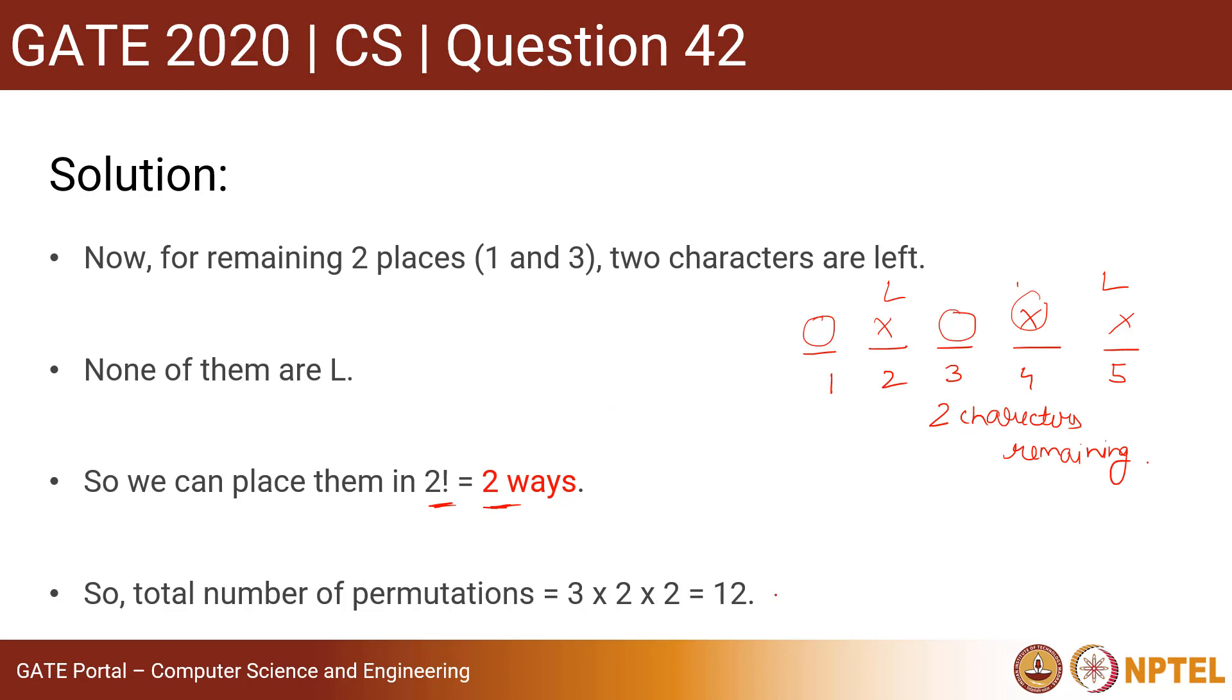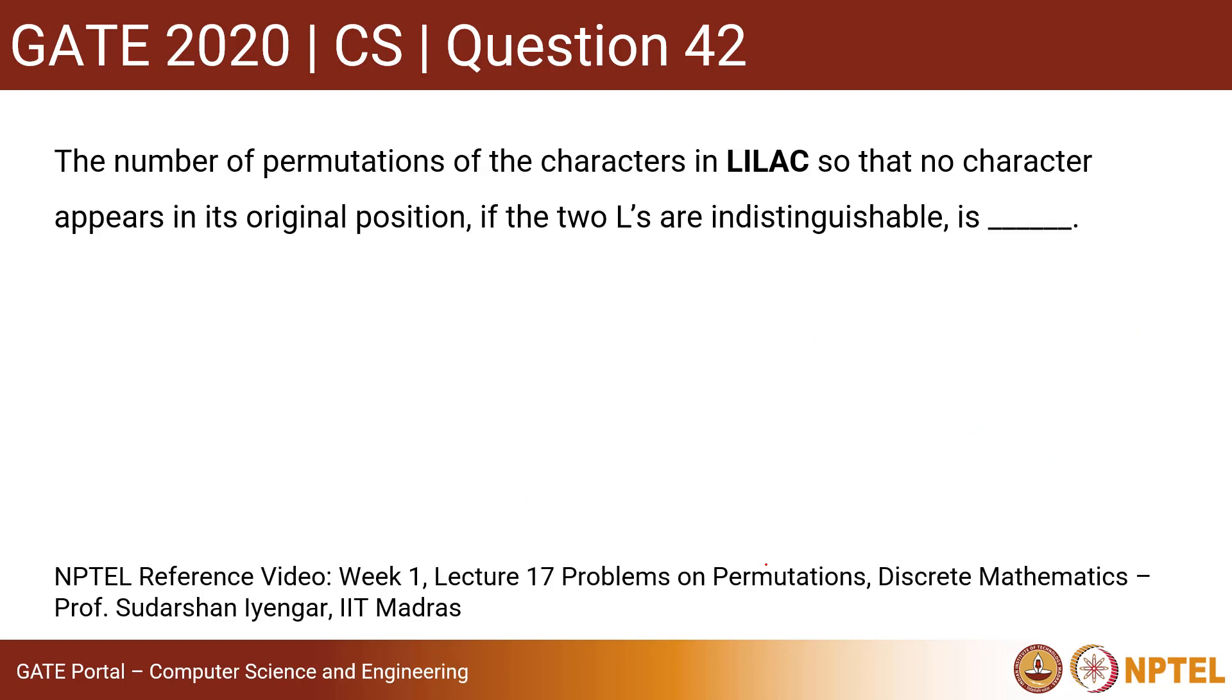And we can place them in 2 factorial ways. So the total number of permutations to fill this is 3 × 2 × 2, that is equal to 12. So the answer to this question is 12. Thank you.